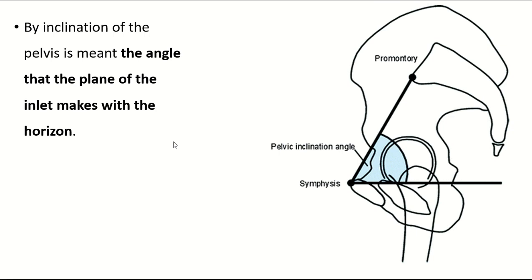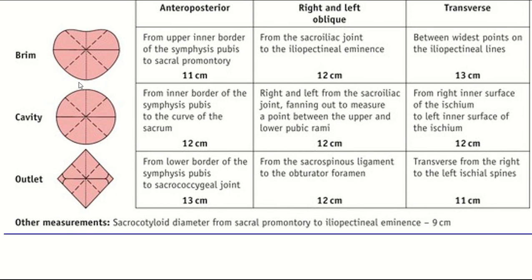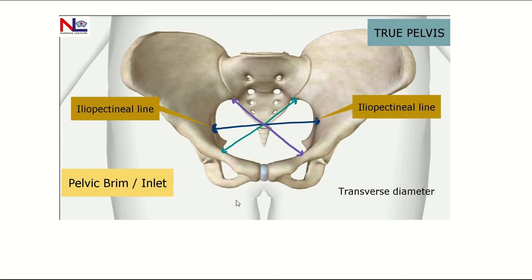Inclination of the pelvis means the angle that the plane of the inlet makes with the horizontal — this is the angle of inclination. The pelvic diameters are measured at the pelvic inlet, at the cavity, and at the outlet, taken in three regions: anteroposterior, oblique, and transverse. The anteroposterior diameter runs from the upper border of the pubic symphysis to the sacral promontory; the oblique from the sacroiliac joint to the iliopubic eminence; and the transverse is the maximum transverse diameter.